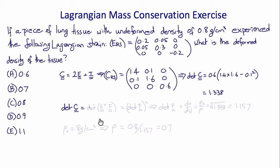Now the determinant of C is the determinant of F transpose F, which is the square of the determinant of F. Therefore the determinant of F, which is the deformed to undeformed volume ratio, or the undeformed to deformed density ratio, is equal to the square root of 1.338, which is 1.157.